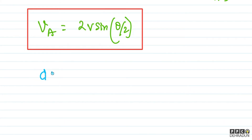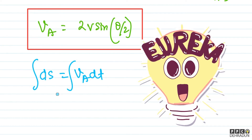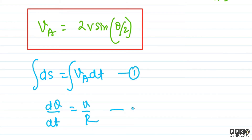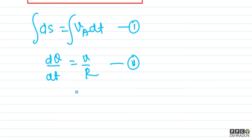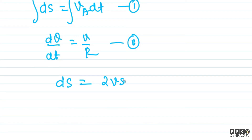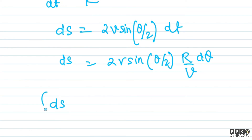Now to find the distance, we write ds = VA·dt. We also know that dθ/dt = ω = V/R, so dt = R·dθ/V. Substituting: ds = 2V·sin(θ/2) · (R·dθ/V), which simplifies to ds = 2R·sin(θ/2)·dθ. We then integrate this expression.